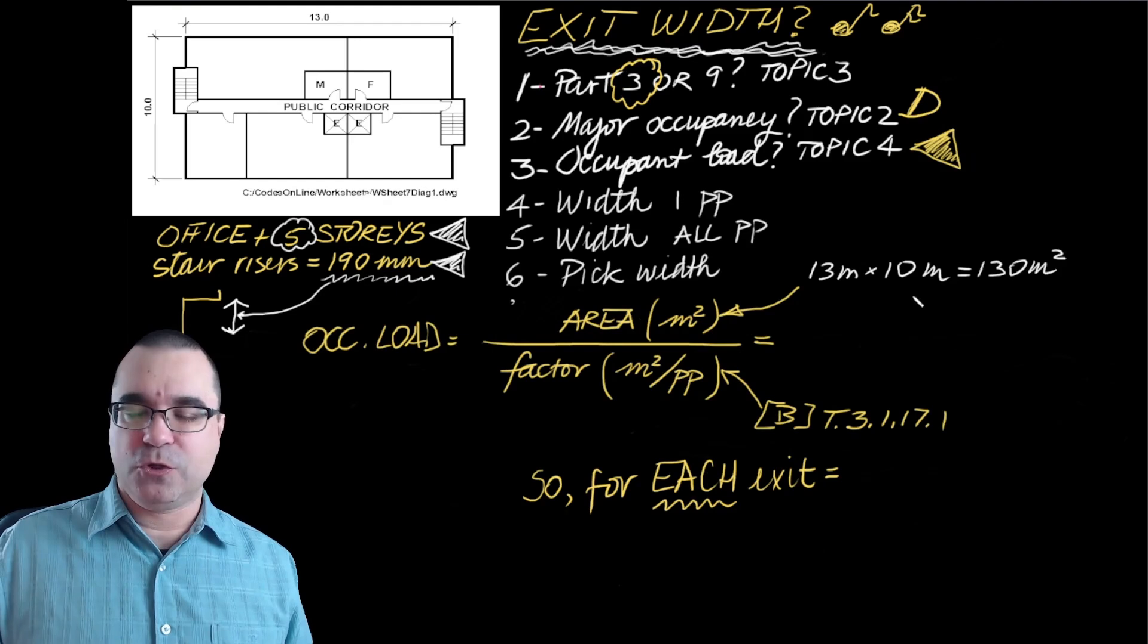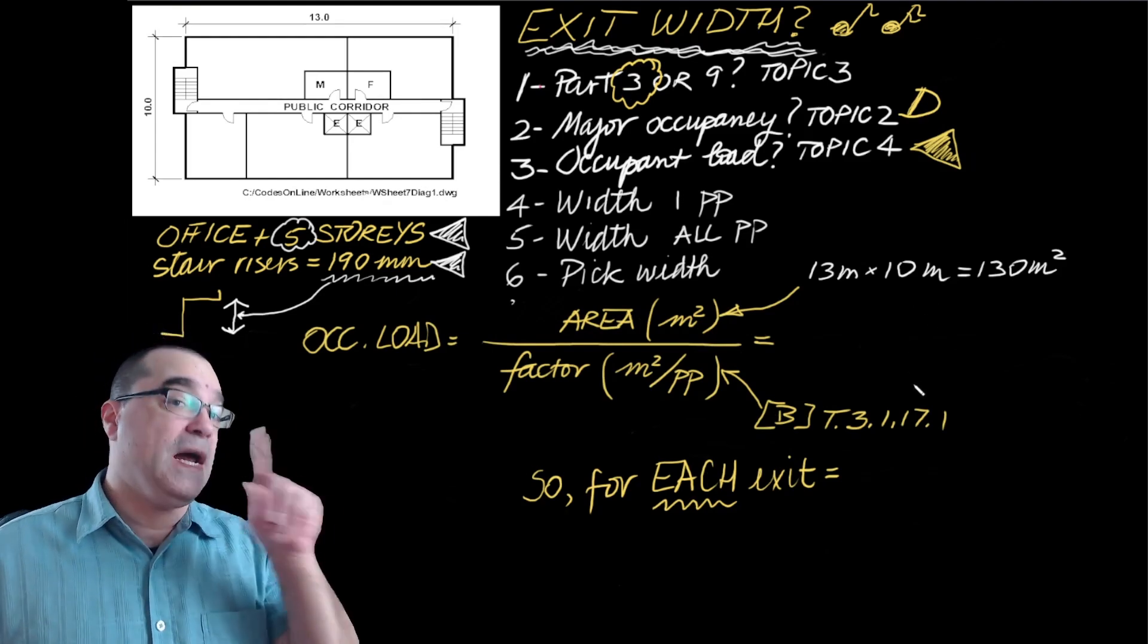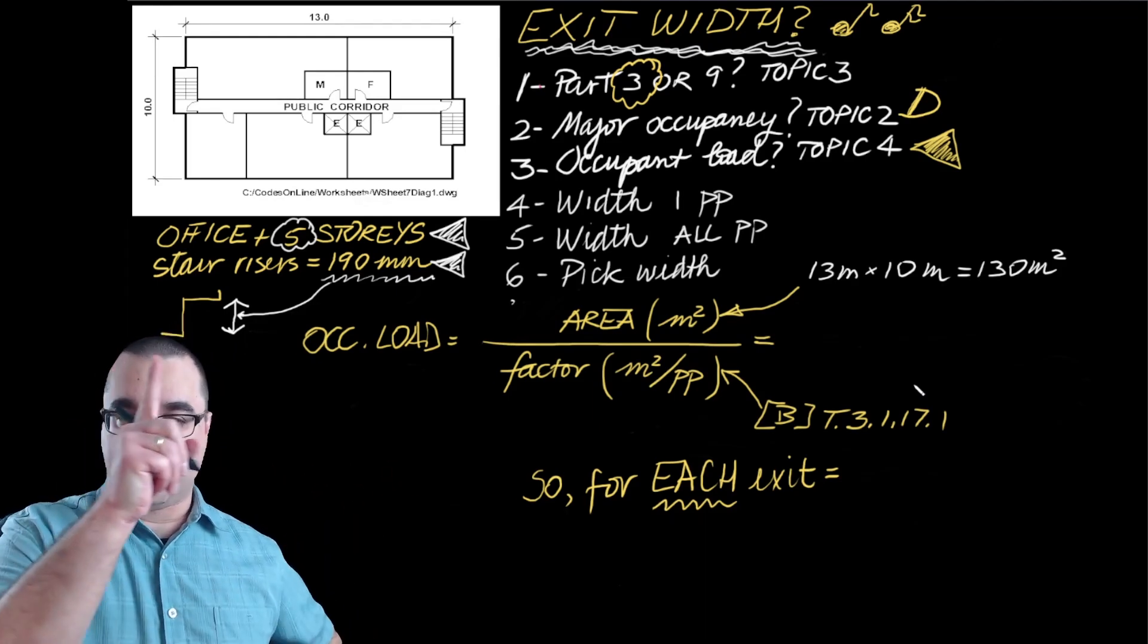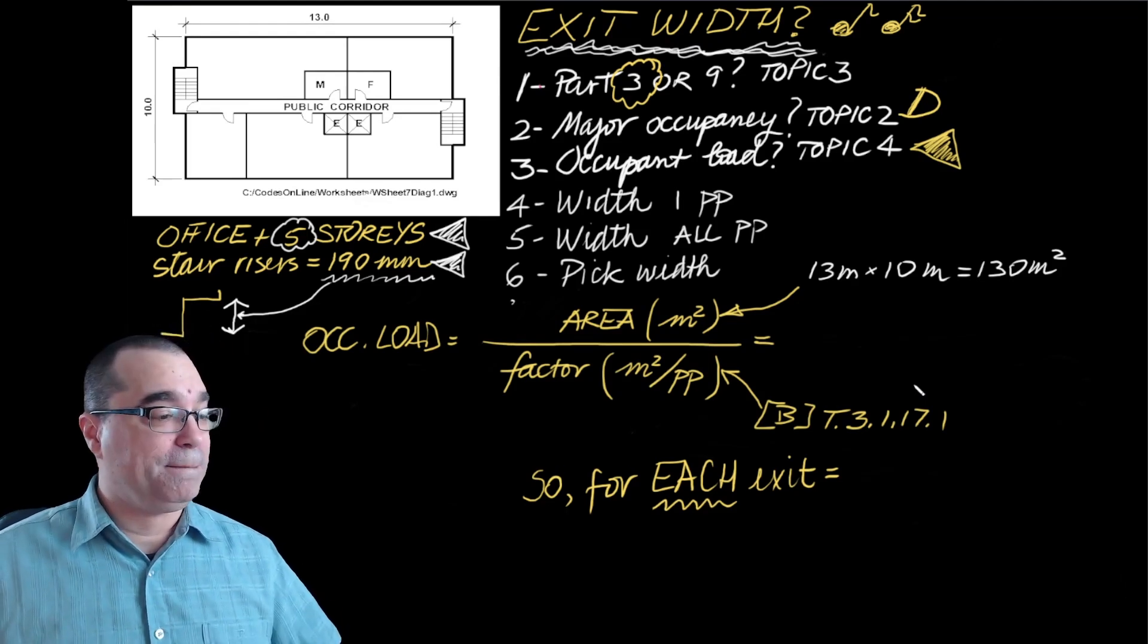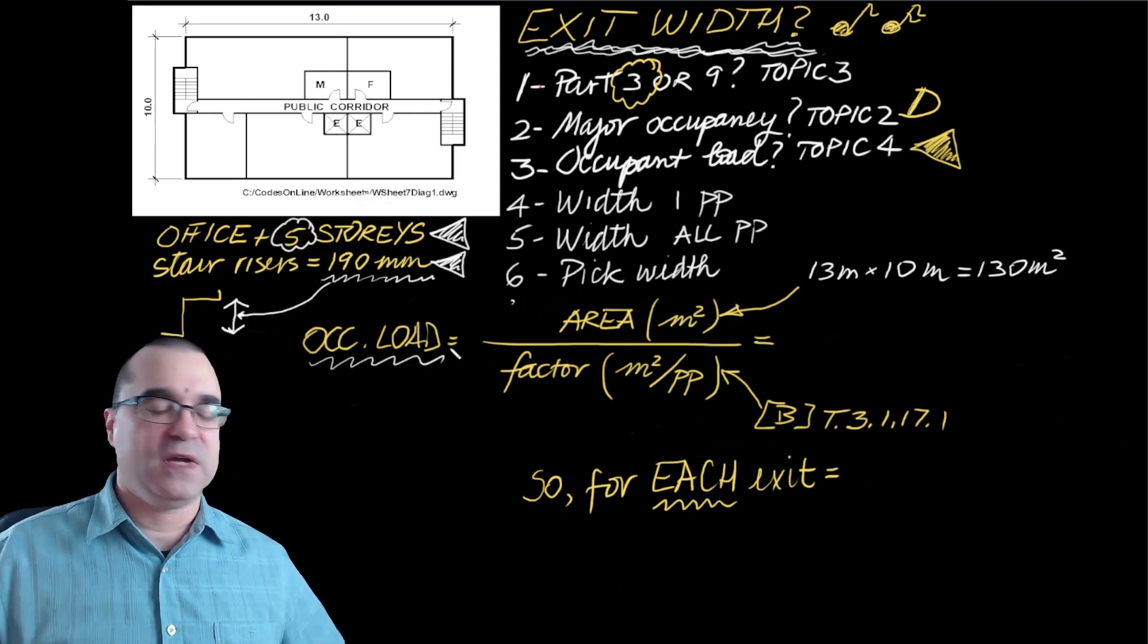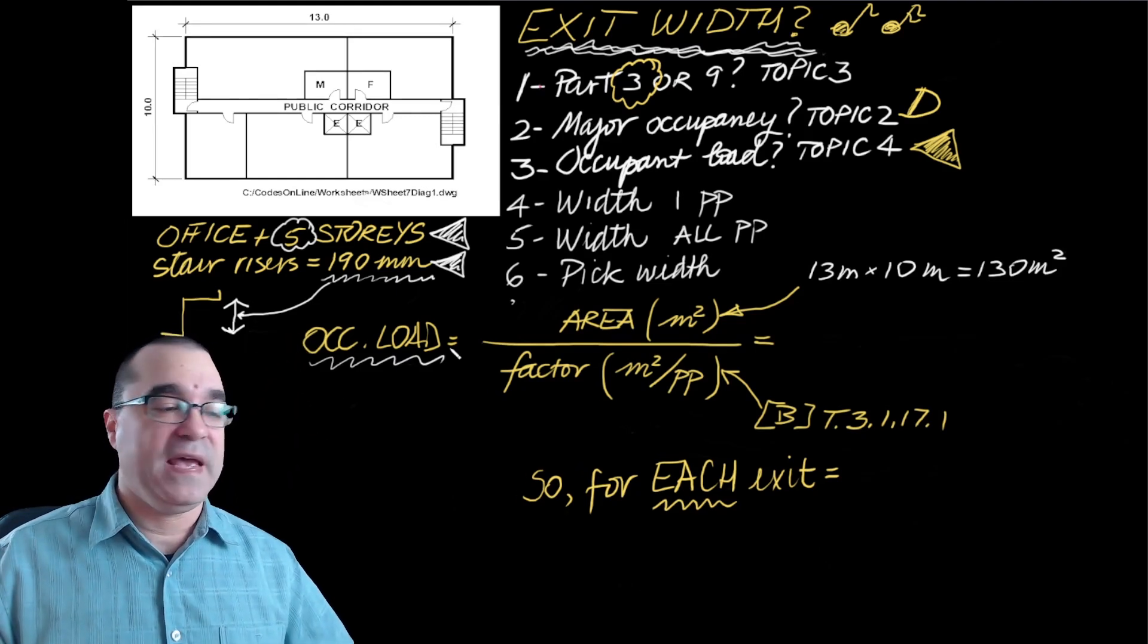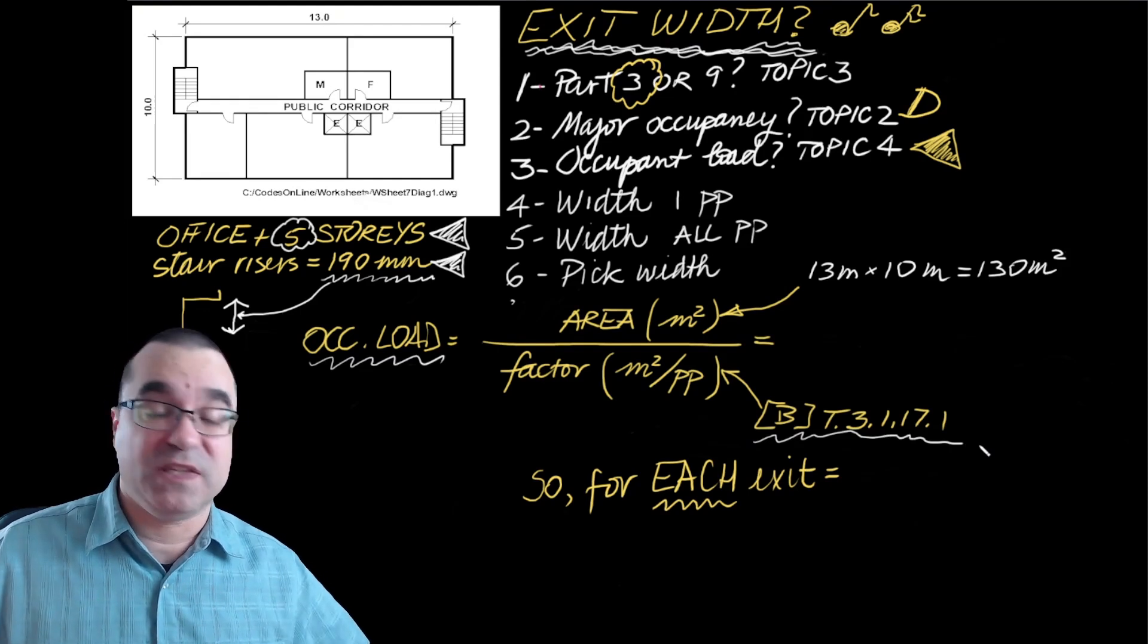On step number three, now that we know this is a D major occupancy and we're using Part 3, we now have to figure out the occupant load for this floor area. That's from Topic 4. The occupant load, if you remember, is based on this formula that I'm showing over here. It's the ratio between the area of this floor and a factor that is obtained from Table 3.1.17.1.